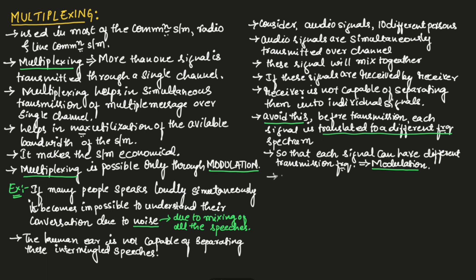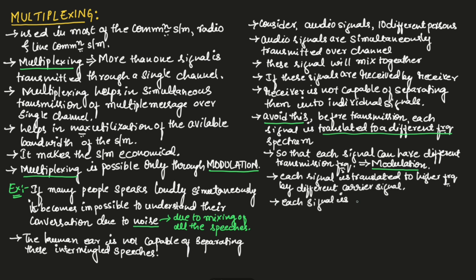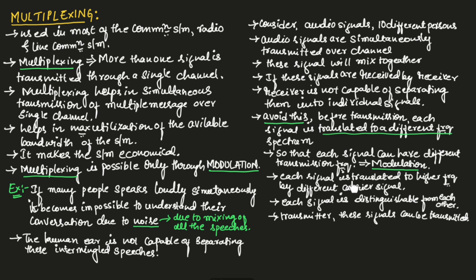In modulation, each signal is translated to a higher frequency by using a different carrier signal, so that each signal is distinguishable from the others. At the transmitter end, these signals can be easily transmitted over a channel since they occupy different frequency spectra.